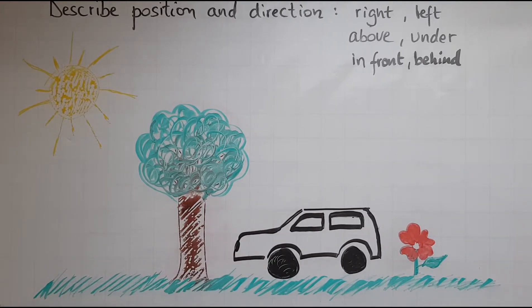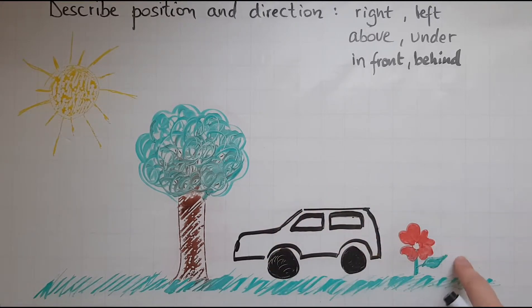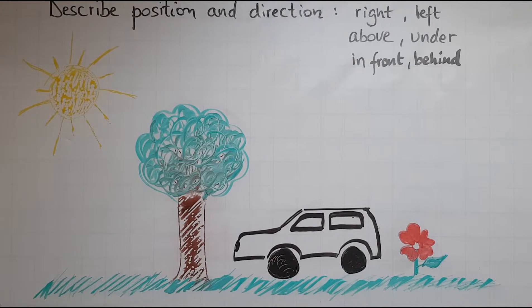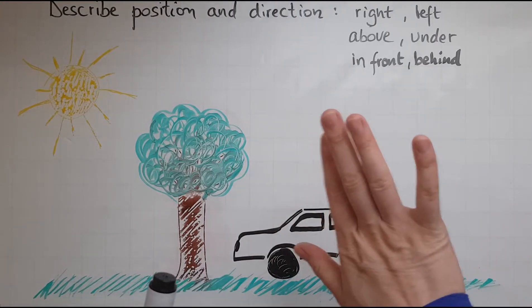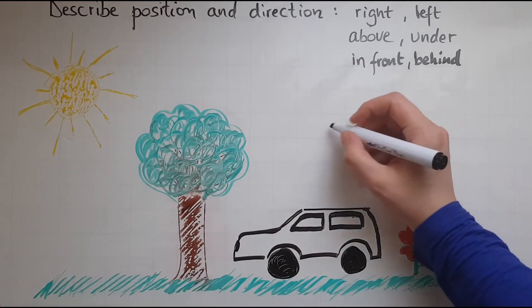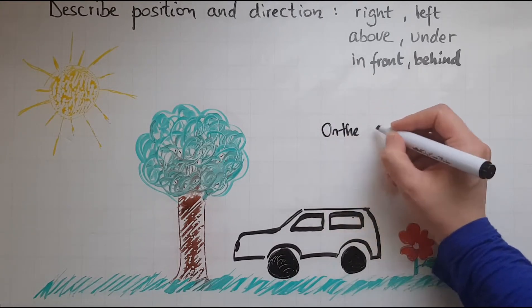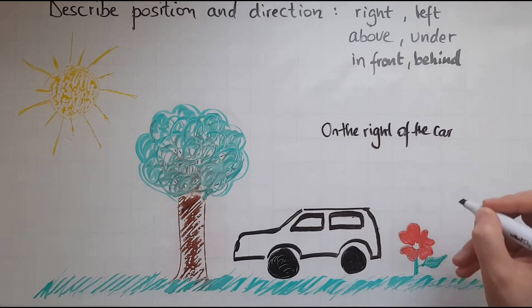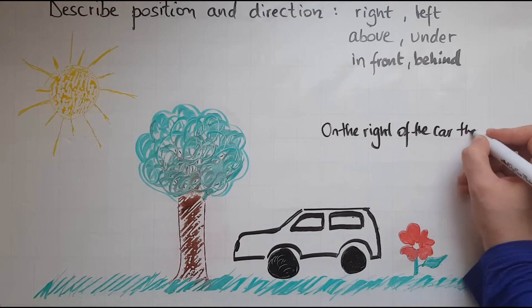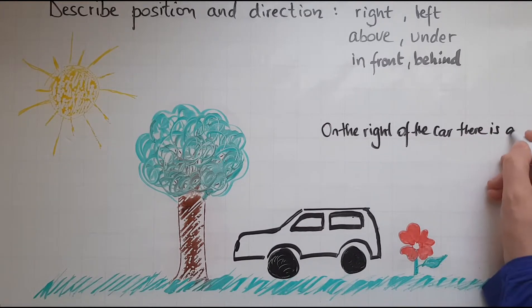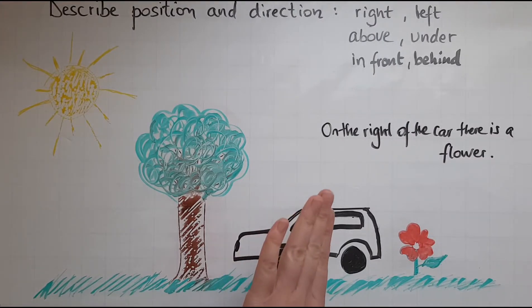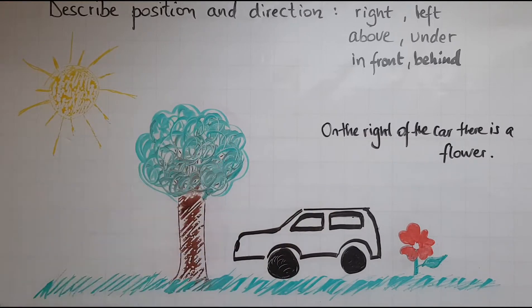On the right of the car there is a flower — so on the right, on this side, is the right-hand side. On the left of the car there is a tree.